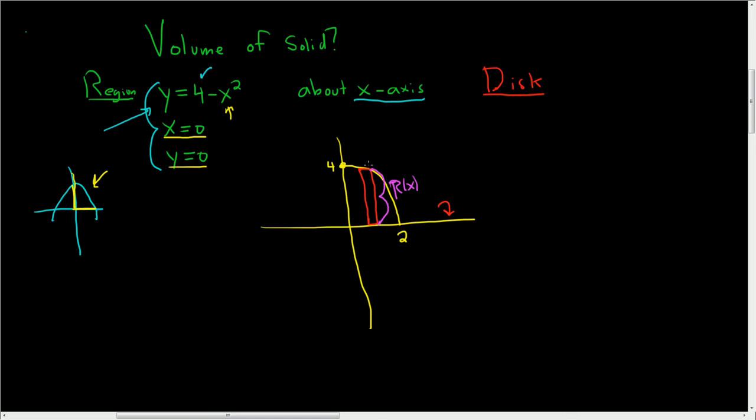So that full distance is simply 4 minus x squared. So in our problem, big R of x is equal to 4 minus x squared.